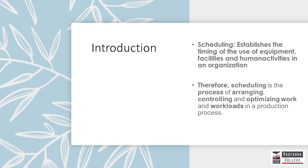In a manufacturing environment, production must be scheduled. The scheduling department needs to develop schedules for the workforce, machinery to be used, the procurement function, maintenance of machinery, and the demand for the product of the organization.